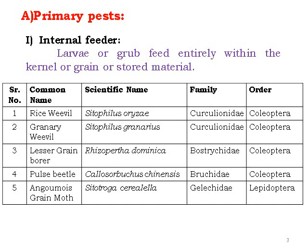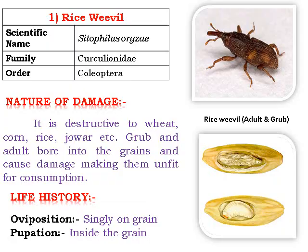Mostly these are from Coleoptera except the Angoumois grain moth, Sitotroga cerealella, from the Gelechiidae family, Order Lepidoptera. The lesser grain borer and granary weevil are from Coleoptera and cause great damage as internal feeders on grains. Sitotroga cerealella causes destructive damage to corn, rice, jowar, and other grains, with grubs boring into the grains making them unfit for consumption.